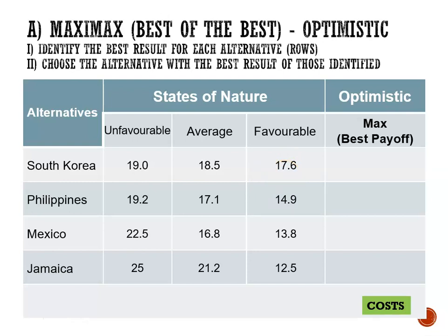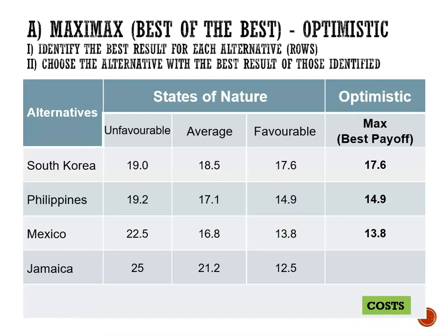For South Korea we're looking at 19 million, 18.5 million, or 17.6 million — the best is the lowest cost of 17.6 million. For Philippines the options are 19.2 million, 17.1 million, or 14.9 million — the best is 14.9 million. For Mexico: 22.5 million, 16.8 million, or 13.8 million — best is 13.8 million. For Jamaica: 25 million, 21.2 million, or 12.5 million — best is 12.5 million.